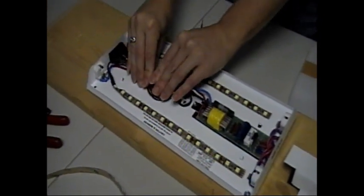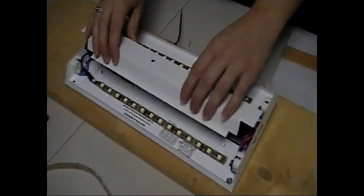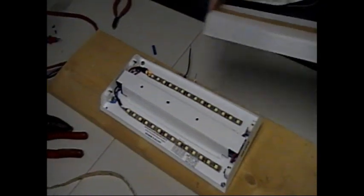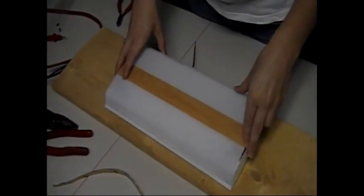Next, I'm tucking all the wires together so they fit underneath the ballast cover. Now, I'm putting the light cover right back over top.